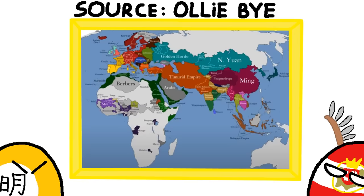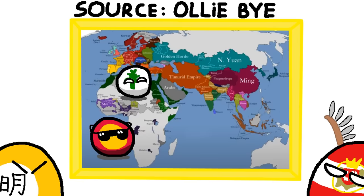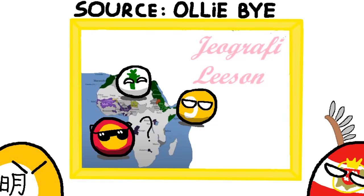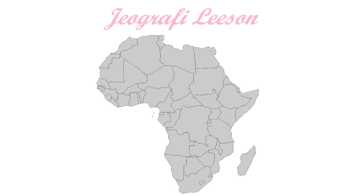Just like Eurasia, Africa has also had a lot of empires, some examples being Mali, Kanem-Bornu, and the several Egyptian dynasties. Unlike Eurasia though, Africa has always looked noticeably empty compared to the vibrant colors in the north and the east. To understand why, we need to understand Africa's geography.